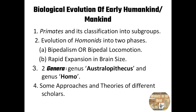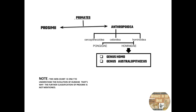The prehistoric period spans a vast time indicating the evolution of humans. As we know, the prehistoric period lacked literary sources — no written records were there. Archaeological evidences show the evolution of humans. Our topics include: primates and their classification, evolution of hominids, the genus Australopithecus and Homo, and approaches and theories of different scholars.